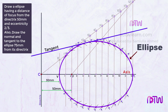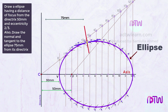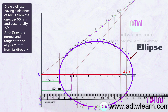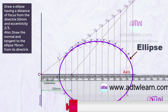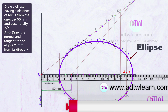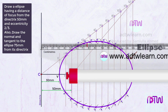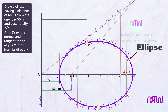Next we need to mark a tangent and normal at a point 75 mm from the directrix. Using a roller scale with zero at the directrix, move it up until the 75 mm mark falls on the ellipse curve. Mark this point as P — it is 75 mm from the directrix.